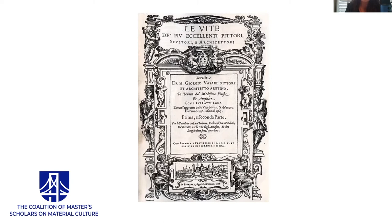The Lives is dedicated to Grand Duke Cosimo I of Florence, and you can see the Medici coat of arms at the top of this frontispiece. The first edition was published in 1550, and an expanded second edition was published in 1568. It is notable that particularly in the second edition, Vasari refers to various sources — he gathered stories and anecdotes from supposedly trusted sources and compiled them into his collection of biographies.